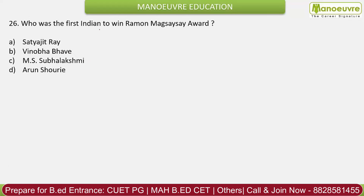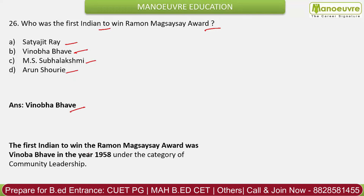Question 26: Who was the first Indian to win the Ramon Magsaysay Award? Options: Satyajit Ray, Vinoba Bhave, M.S. Subbalakshmi, Arun Shourie. The correct answer is Vinoba Bhave. Vinoba Bhave was the first Indian to win the Ramon Magsaysay Award in 1958 under the category of Community Leadership. He was a follower of Gandhiji and the first satyagrahi in the Individual Satyagraha of 1940. The second was Jawaharlal Nehru. He also started the Bhoodan Movement after independence.